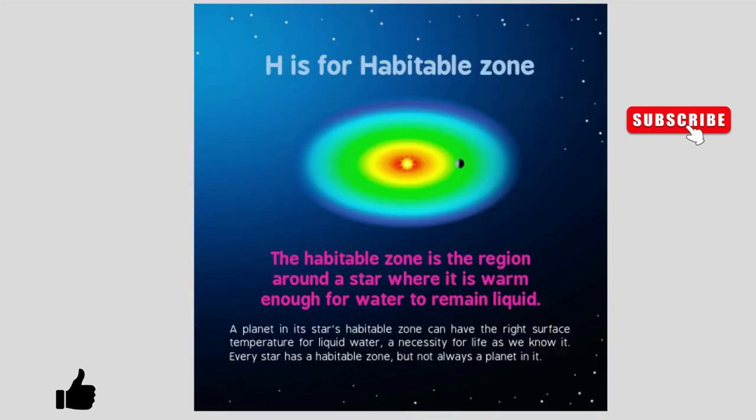H is for habitable zone. The habitable zone is the region around a star where it is warm enough for water to remain liquid. A planet in its star's habitable zone can have the right surface temperature for liquid water, a necessity for life as we know it. Every star has a habitable zone, but not always a planet in it.